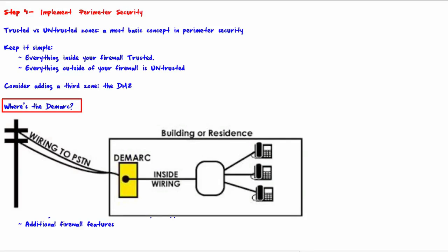To get internet access, we need to pay an ISP (internet service provider) to provide that connection. Any equipment necessary for the internet connection that is owned by you is called CPE — customer premises equipment. Anything outside of the CPE is owned by the ISP. The exact connection point is called the DMARC. Everything inside of the DMARC is owned and controlled by you; anything outside of the DMARC is owned and controlled by the ISP. The DMARC is important because it specifically defines who is responsible for what.